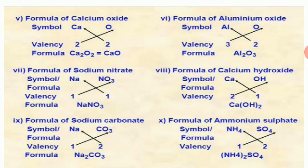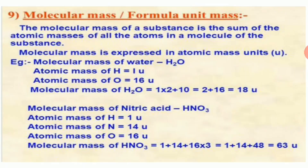The molecular mass of a substance is the sum of the atomic masses of all the atoms in one molecule. For example, water H₂O: molecular mass = (2 × atomic mass of H) + (1 × atomic mass of O) = (2 × 1) + 16 = 18 u.